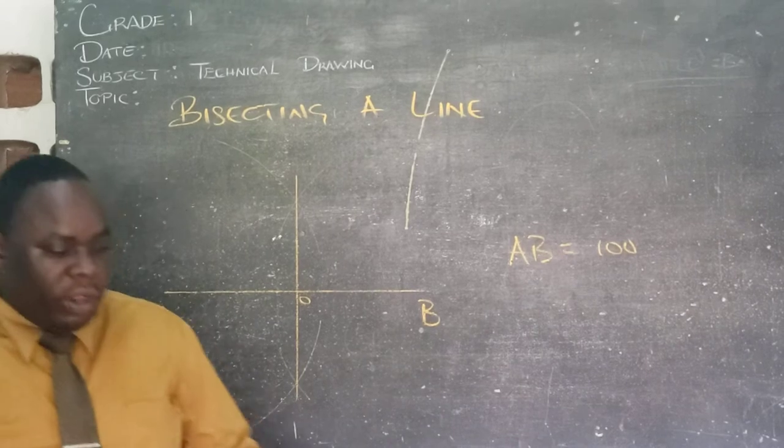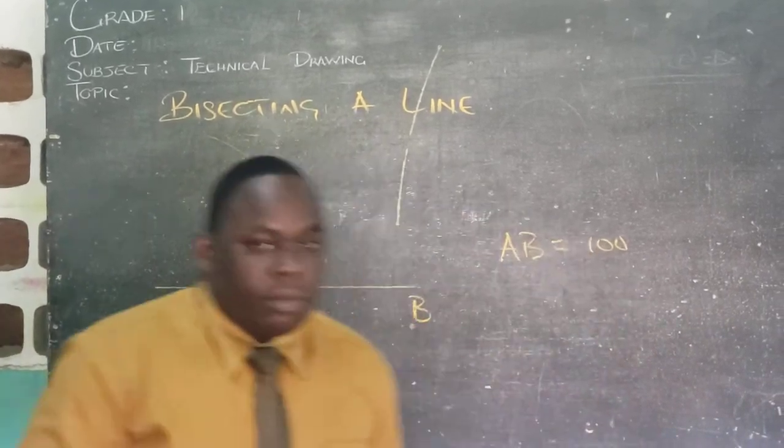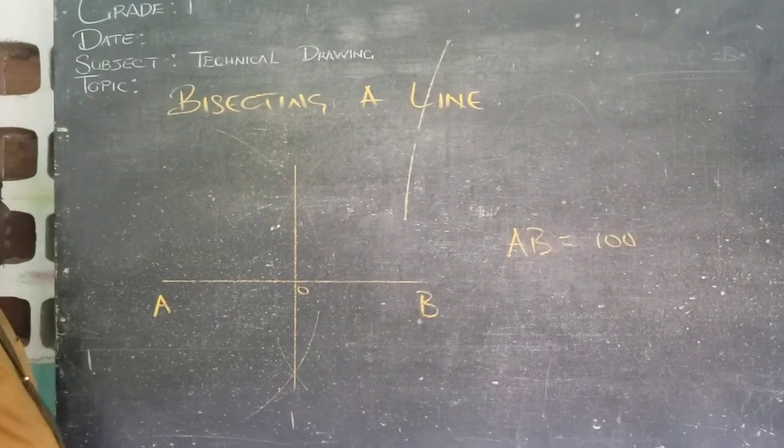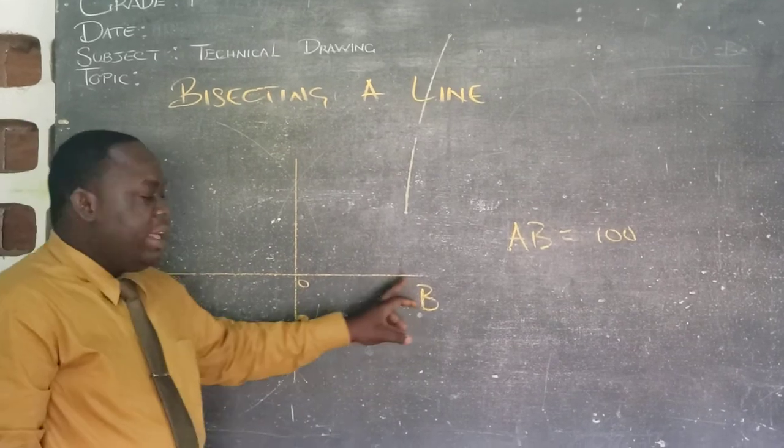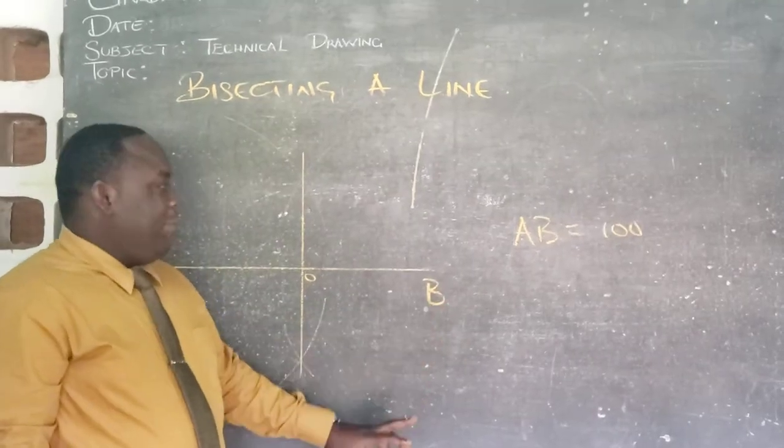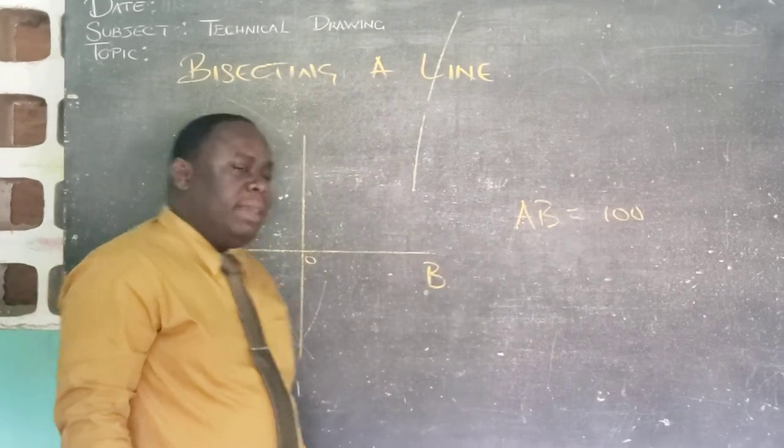So let us do a little review as to what we have just done. So we are doing a bisecting of our given line. So we have our given line, which is AB. AB is equal to 100 millimeter.